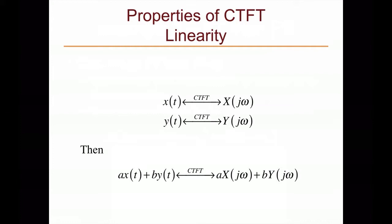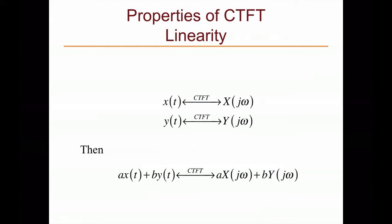Let's look at properties of the CTFT. The first property is linearity. If signal X(t) corresponds to spectrum X(jω), and signal Y(t) corresponds to spectrum Y(jω), then a linear combination of scaled X(t) and Y(t) transforms to the corresponding scaled combination of X(jω) and Y(jω). This indicates that if you have complicated signals, you can divide them into simpler signals, transform each separately, and combine the results — it gives the same answer as transforming in one go.